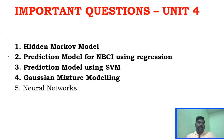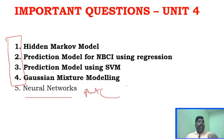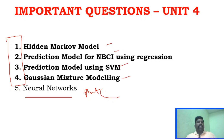For Unit 4, you need to focus on 4 questions. Neural Networks — just go through them. The key Part B and Part C questions for Unit 4 include: Prediction Model Using SVM and Fitting Gaussian Models.